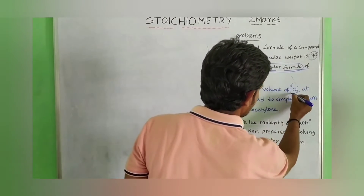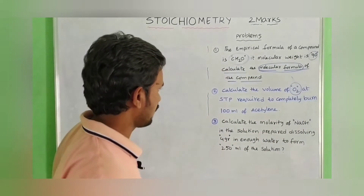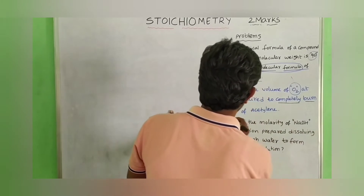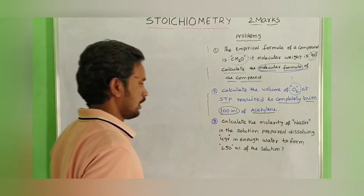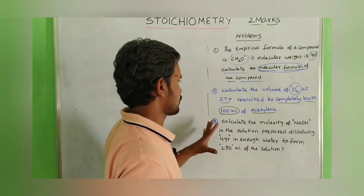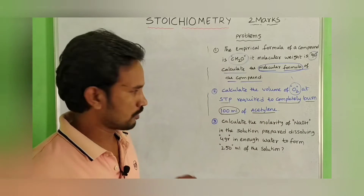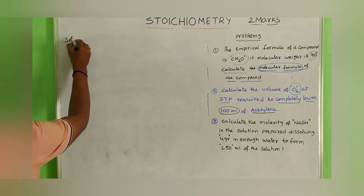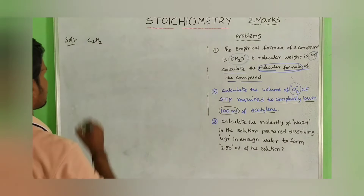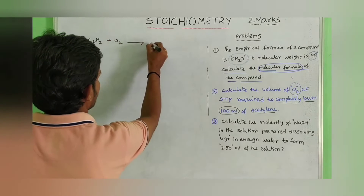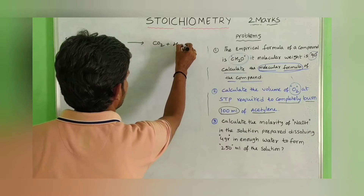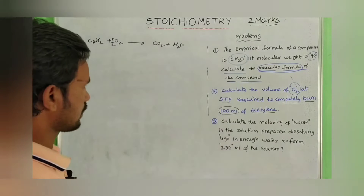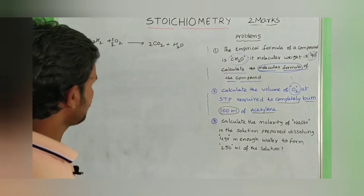Calculate the volume of O2 at STP required to completely burn 100 ml of acetylene. The general reaction is: C2H2 + O2 → CO2 + H2O. In this reaction, 5/2 moles of oxygen is required per mole of acetylene.